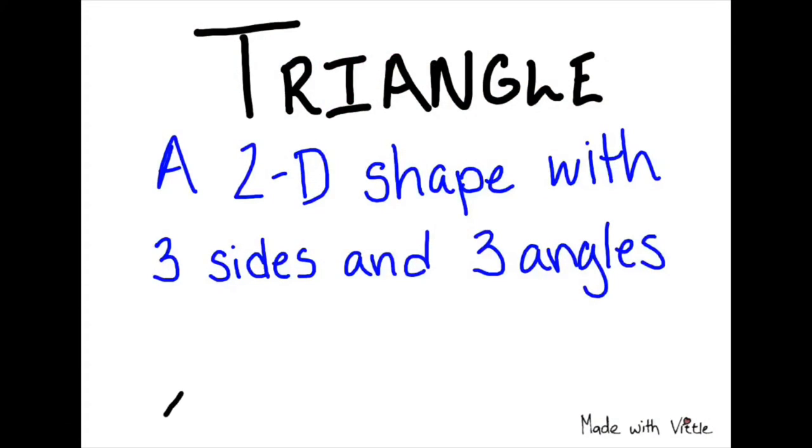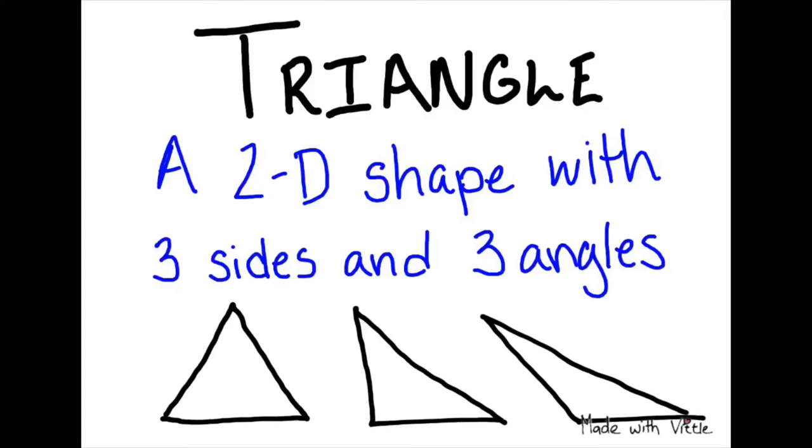A triangle is a 2D shape, that means it's flat, that has three sides and three angles. As we go through this unit we will learn about some of the other rules for triangles, but first we're going to look at the different types of triangles that we can make.